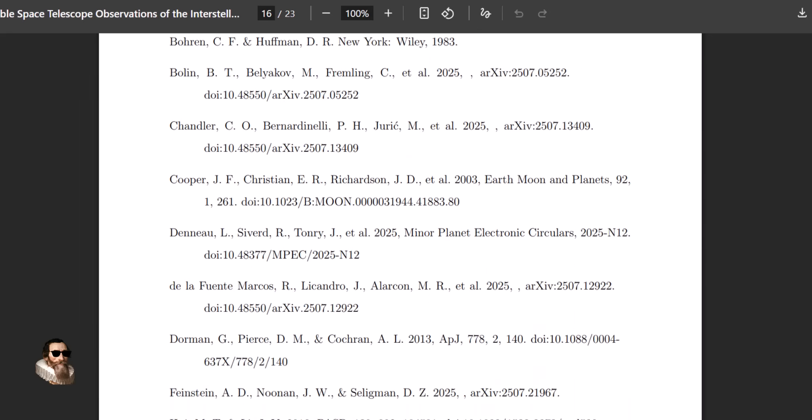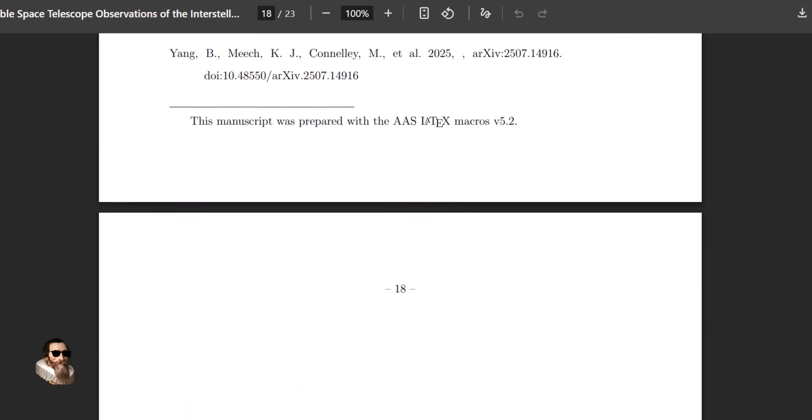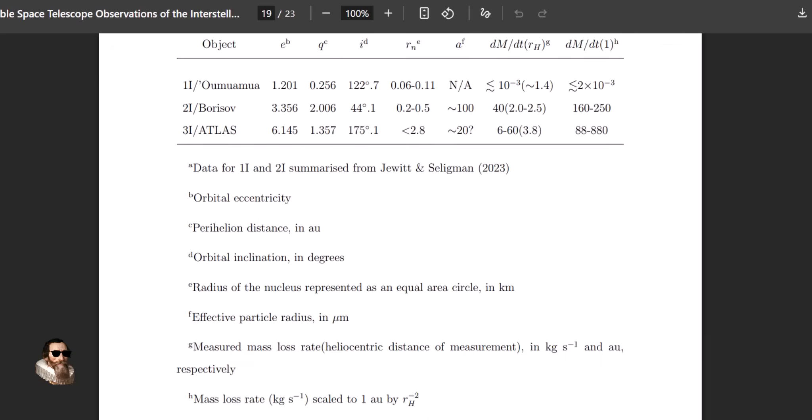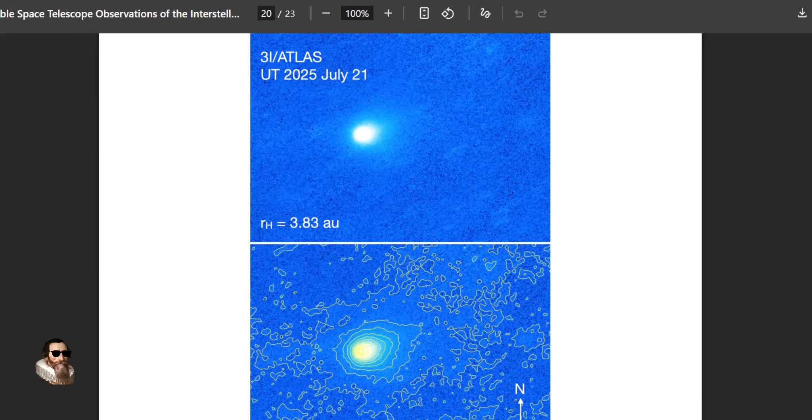Alternatively, 3i Atlas could be a spacecraft powered by nuclear energy, and that this material emitted from its frontal surface might be from the dirt that accumulated on its surface during its interstellar traveling.